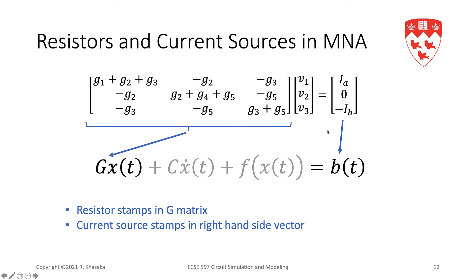Going back to the MNA equations, the resistor stamps appear in the G matrix, and the current source stamps — which we'll see shortly — appear in the right-hand side vector B. In this case we have no memory elements or nonlinear elements, so there is no C matrix or F(X) term.